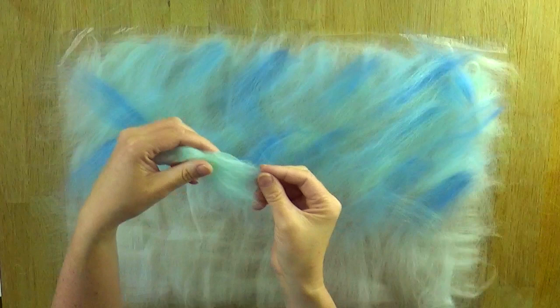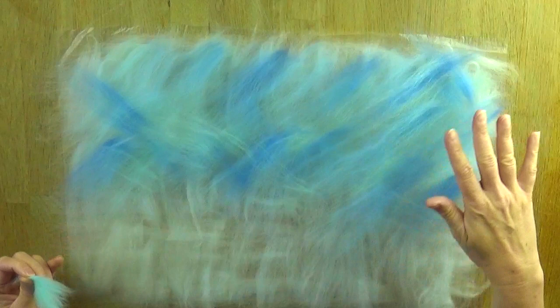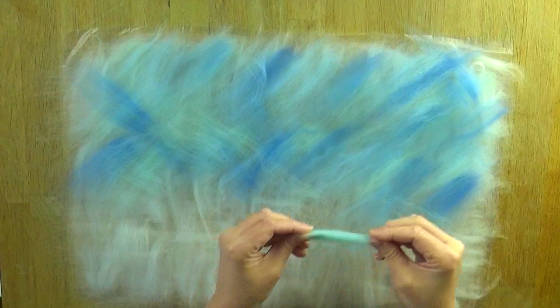And you can see how feathery and how light this wool is, the wool fibers are as I'm pulling away. You're just gradually building up layers as you go and pat it down just so that nothing flies away. And that would be called shading.